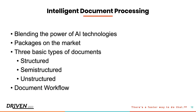To review: intelligent document processing is a way to blend AI technologies to efficiently process all types of documents, extract the relevant data, and feed the output into downstream applications using automation. There are many packages that do this kind of work — they all follow a similar process and have similar components. We discussed the three basic types of documents — structured, semi-structured, and unstructured — and the AI technologies used to extract data from each. Lastly, we went through a typical IDP workflow, including a solution using Amazon Web Services.